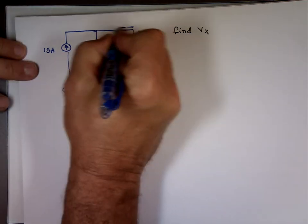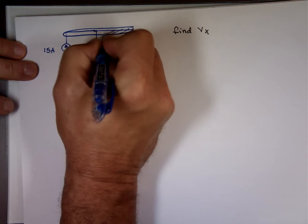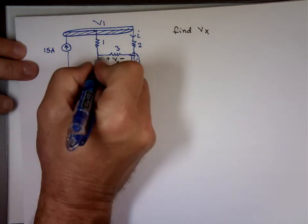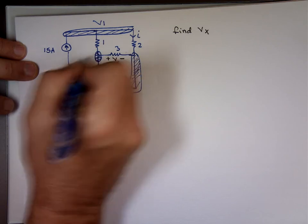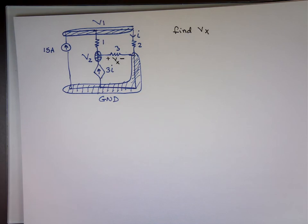So this node here, the voltage there is called V1. All of this is one node. And this is the other node, V2. I'm making them visible there by scribbling all over them. So I have V1, V2, and the ground.